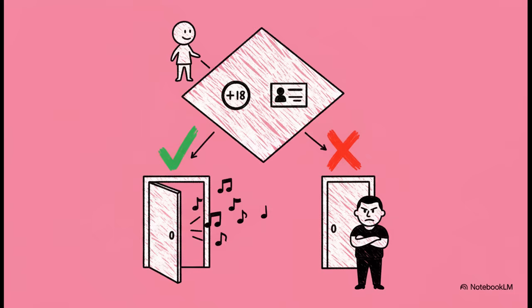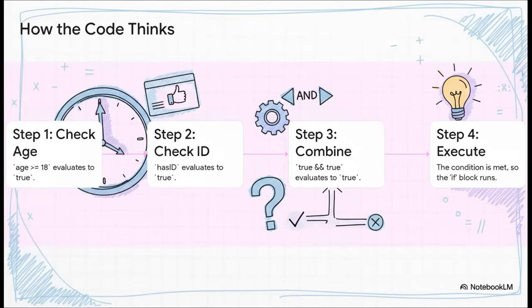The IF part is where the bouncer checks the conditions. If the final answer is true, if you meet all the rules, then the code inside the IF block runs. Come on in. But if that condition is false for any reason, the computer completely skips that part and jumps straight to the ELSE block, which says, sorry, access denied. And here's the cool part. This is exactly how the computer thinks it through, one step at a time. It doesn't see the whole picture at once.